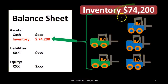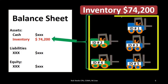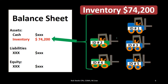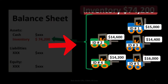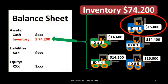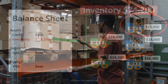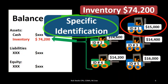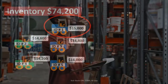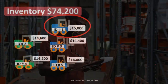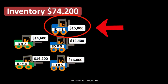We might take this $74,200, assign identification numbers, and say this is ID number one, ID number two, and so forth. That allows us to assign specific dollar amounts — meaning ID number one cost $15,000, number two cost $14,600, number three cost $14,400. We're going to specifically identify and track each item by its actual cost. That method is called specific identification. Using that method, we can say the particular forklift we sold — number one — cost $15,000.